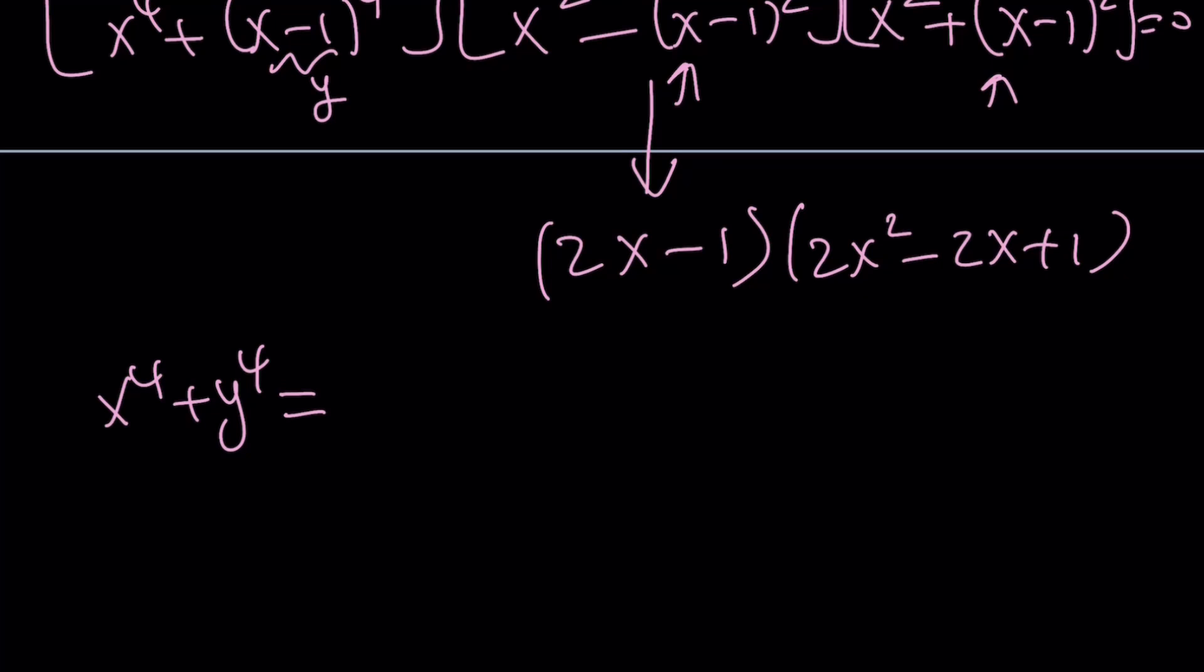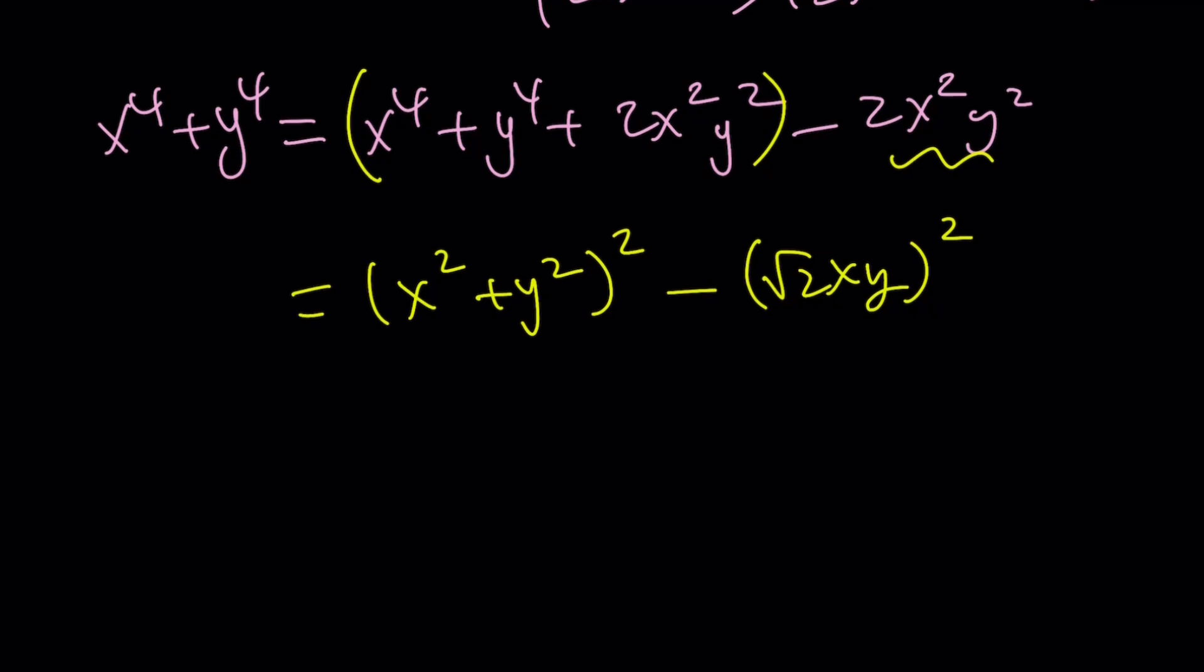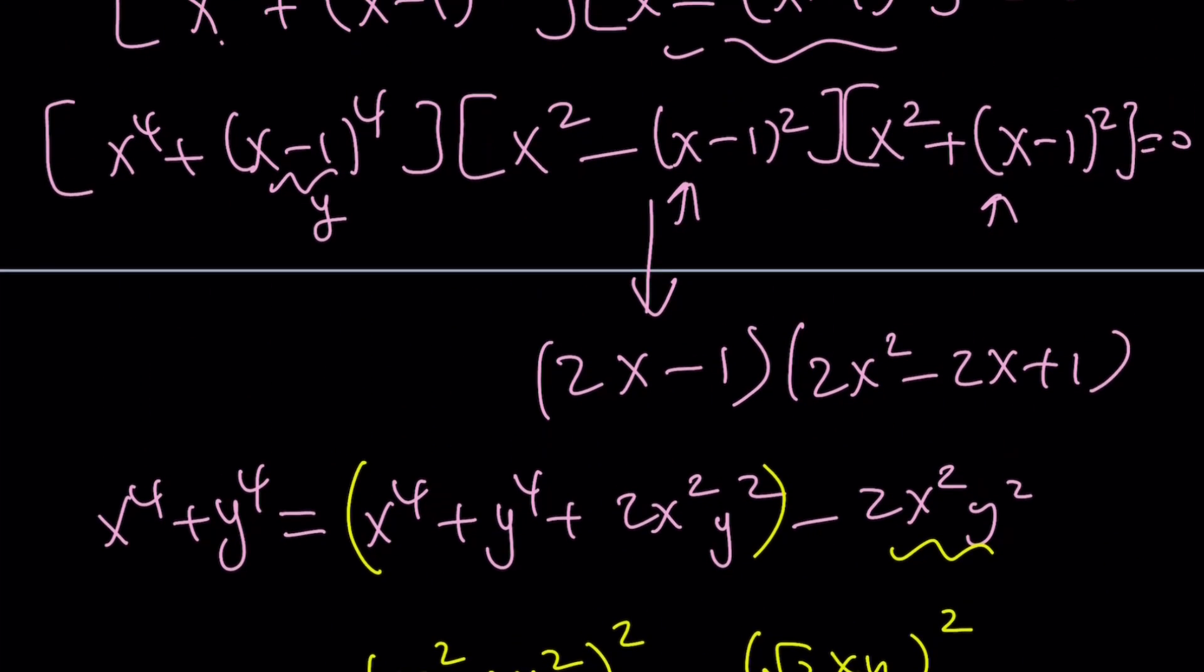And x to the fourth plus y to the fourth can actually be factored. How? By using Sophie Germain. Yes, we've done some videos on it. So we can do the following. Add 2x squared y squared to this and subtract it. Now this part becomes a perfect square. And that is perfect. That becomes x squared plus y squared squared. And the second part can be written as root 2xy quantity squared. So we get a difference of two squares. Sort of. But it's still good enough. And this can be turned into x squared plus square root of 2xy plus y squared. And then x squared minus root 2xy minus y squared. Awesome.